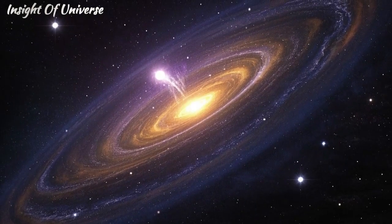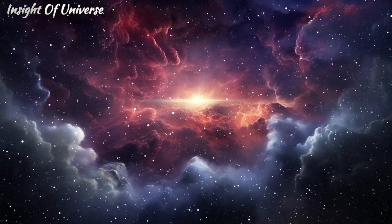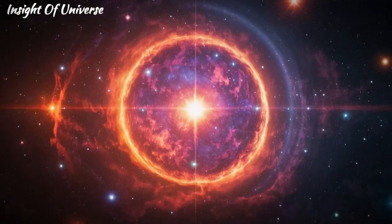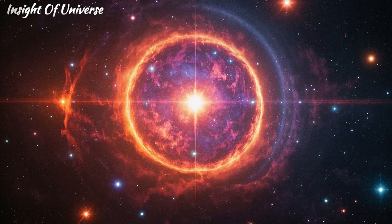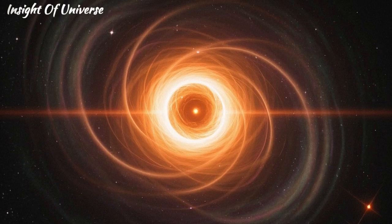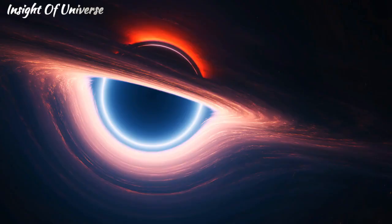To understand how quasi-stars came to be, we need to travel back billions of years when the universe was young, hot, and chaotic. Back then, the first stars, known as protostars, were true giants. Some were so massive that their cores collapsed under their own gravity, forming a black hole.